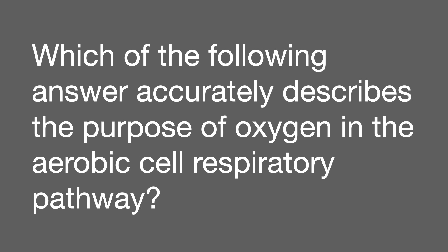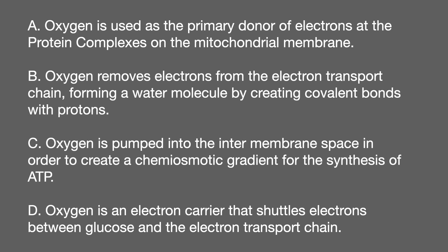Here we see a question on cell respiration. It reads: which of the following accurately describes the purpose of oxygen in the aerobic cell respiratory pathway? A: oxygen is used as the primary donor of electrons at the protein complexes on the mitochondrial membrane. B: oxygen removes electrons from the electron transport chain, forming a water molecule by creating covalent bonds with protons. C: oxygen is pumped into the intermembrane space in order to create a chemiosmotic gradient for the synthesis of ATP. And D: oxygen is an electron carrier that shuttles electrons between glucose and the electron transport chain.